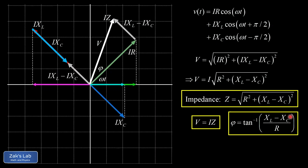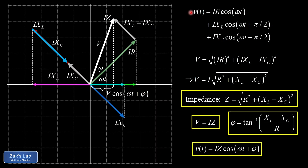Taking the x-component of the vector sum, we multiply V by cos(ωt + φ) and replace V with I·Z. So v(t) = I·Z·cos(ωt + φ) — a single phase-shifted cosine. Starting from a sum of three phase-shifted cosines, phasors let us reduce it to one, where Z = √[R² + (X_L − X_C)²] is the impedance and φ = arctan[(X_L − X_C) / R] is the phase angle.